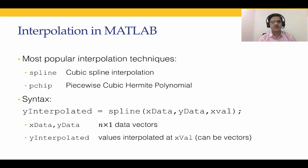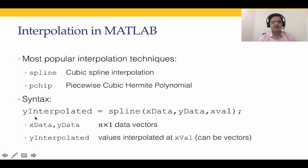The syntax for both spline and pchip are very similar. To run pchip, just replace 'spline' with 'pchip'. The syntax is: y_interpolated = spline(x_data, y_data, x_values), where x_data is the independent data, y_data is the dependent data, and x_values are the points at which we want to interpolate between the original data points.